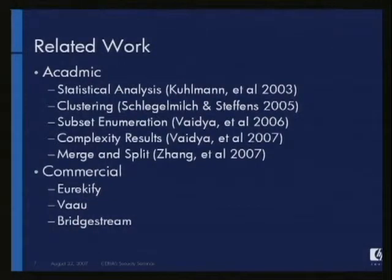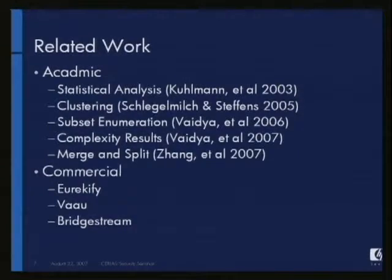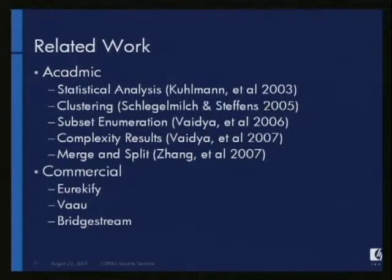He also came up with some complexity results that described how hard the problem is, and I'm going to talk about more complexity results. Then there was another interesting paper by Zhang, which I think appeared either at CCS or SACMAT this last year, where basically you start out with each user having their permission set as the set of roles, and then you do a series of merge and split operations on those roles until you finally come to some sort of equilibrium, at which point you declare you've discovered a unique set of roles.